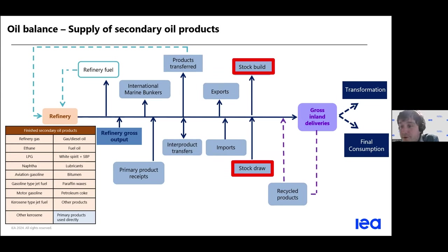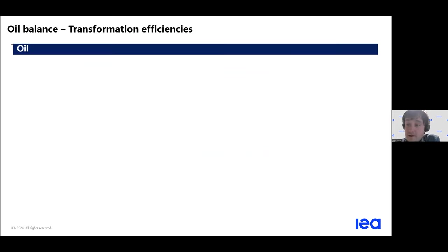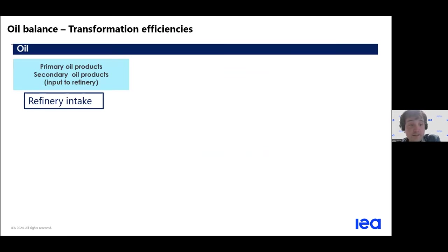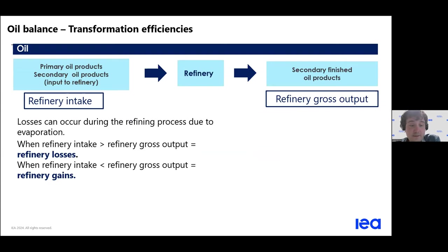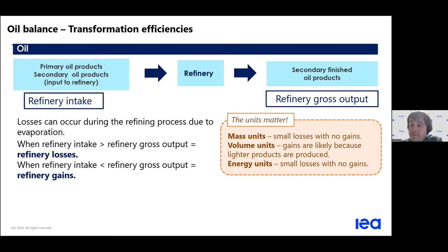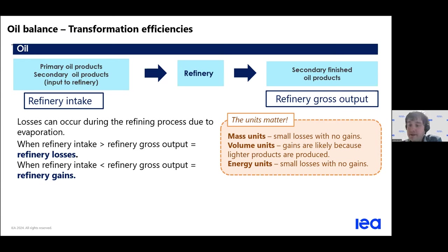You also have, as before, trade and stock changes. Regarding the supply side — we can analyze refining processes in physical terms and it depends on the units. If we reason in terms of mass or energy, we lose a bit with the processes, because the efficiency of a process cannot be above 100%. But in terms of volume, the quantity in output is often higher, because when you refine you often produce a lighter product — so in terms of volume you can have bigger quantities after refining than before.